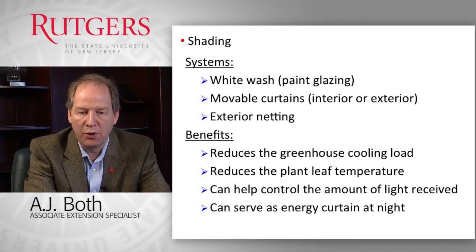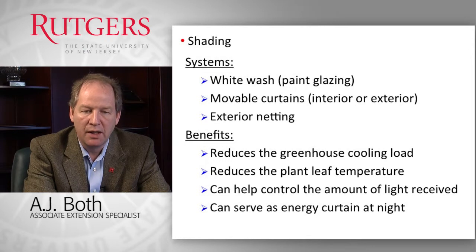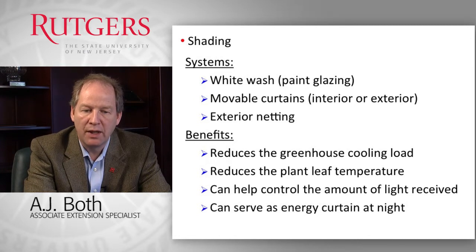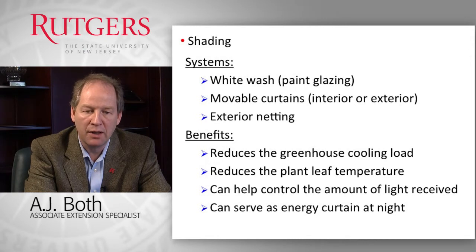Shading systems are also important when thinking about cooling greenhouses, and we have different strategies to use. A very simple strategy is whitewash, where we put a paint-like material on top of the glazing. Other systems allow for more control, such as moveable curtains that can be installed both inside and outside the greenhouse. Some growers also install exterior netting — some moveable, some more permanent — all as a way to reduce the solar heat load coming into the greenhouse.